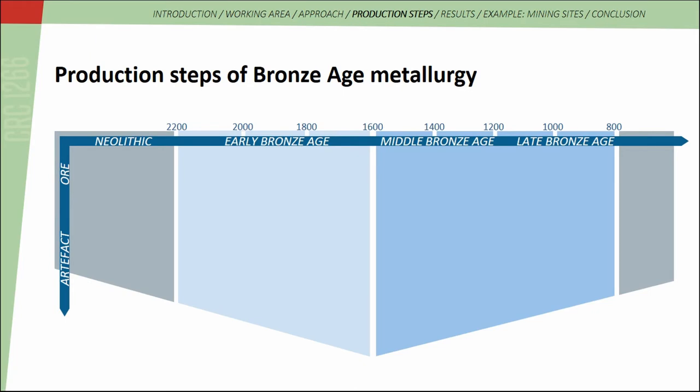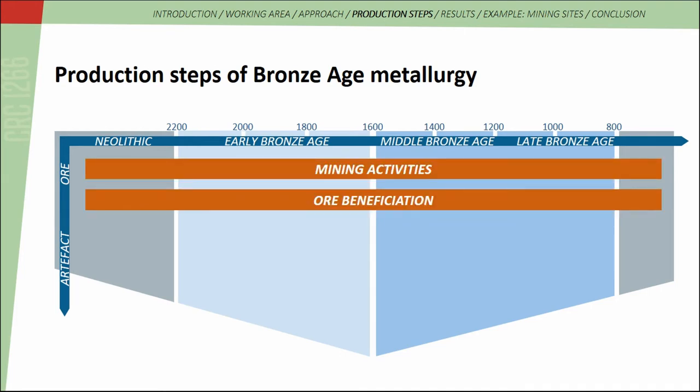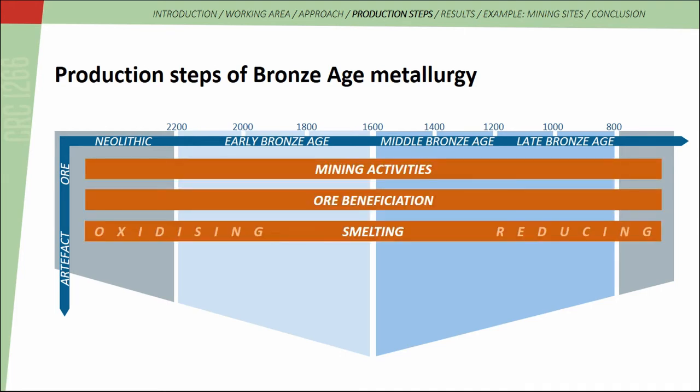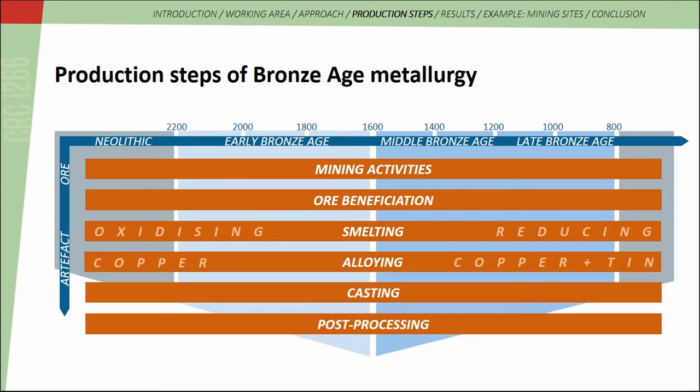Before I get to the energy expenditure calculations, I would briefly like to summarize the production steps of Bronze Age metallurgy, because it is important for further understanding. My energy expenditure calculations include only those parts of the production sequence with direct archaeological evidence. These are: mining activities, beneficiation, smelting, alloying, casting, and post-processing.